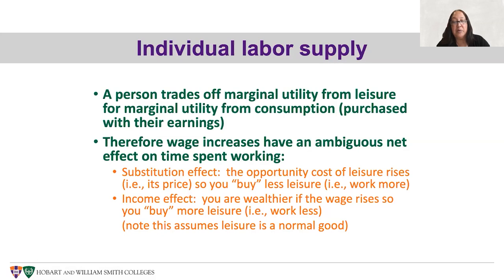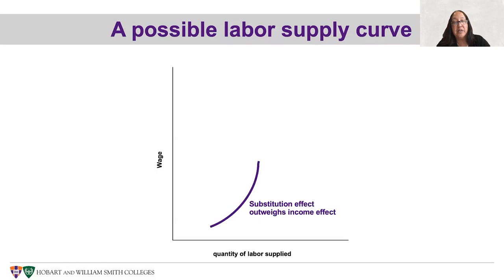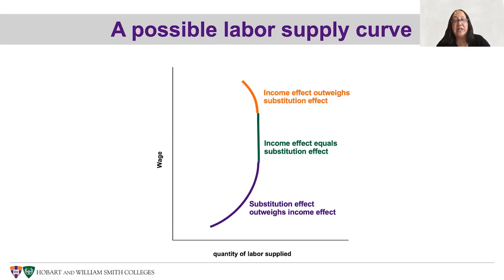This assumes that leisure is a normal good and you actually want more of it as you become wealthier, though that may not be true for everybody. We can imagine a possible labor supply curve for an individual as having three segments. In the lower part, as wages start rising, the substitution effect outweighs the income effect and we have an upward sloping supply curve. In a middle range, the income effect could exactly offset the substitution effect, giving inelastic supply. And if the wage rises high enough, people will in general work less as income effects outweigh substitution effects, producing a backward-bending labor supply curve. For the whole economy, we generally expect the overall labor supply curve to be upward sloping or at worst vertical, because additional people will also enter the market as the wage rises.